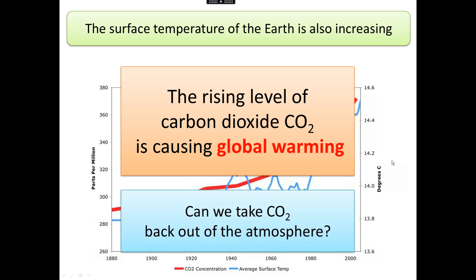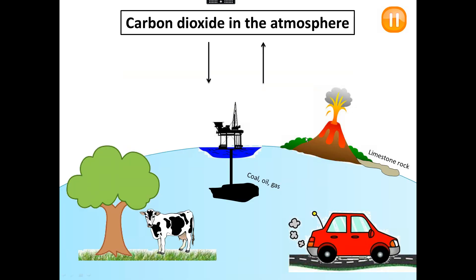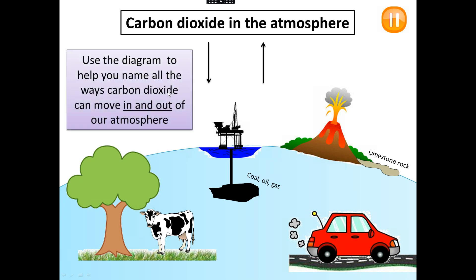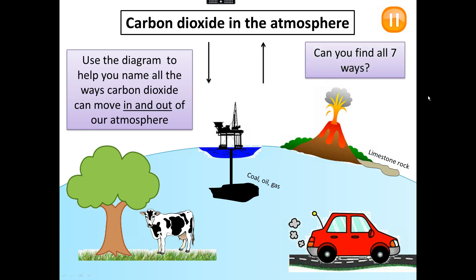So can we take some of that carbon dioxide back out of the atmosphere? Pause the video — there are some clues on the screen to help you think of all the ways carbon dioxide can move into and out of our atmosphere. Some of these pictures represent ways carbon dioxide moves into the atmosphere, some represent ways it is taken out. There are seven ways altogether. Pause the video and see if you can think of all seven and whether they move carbon dioxide in or out of the atmosphere.